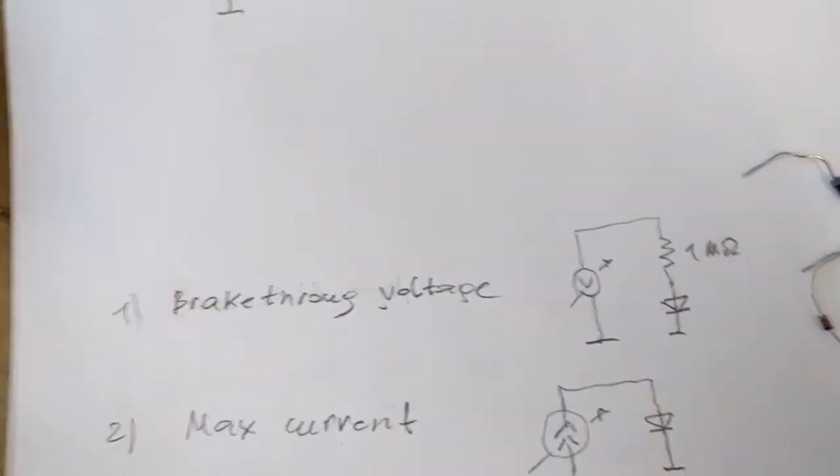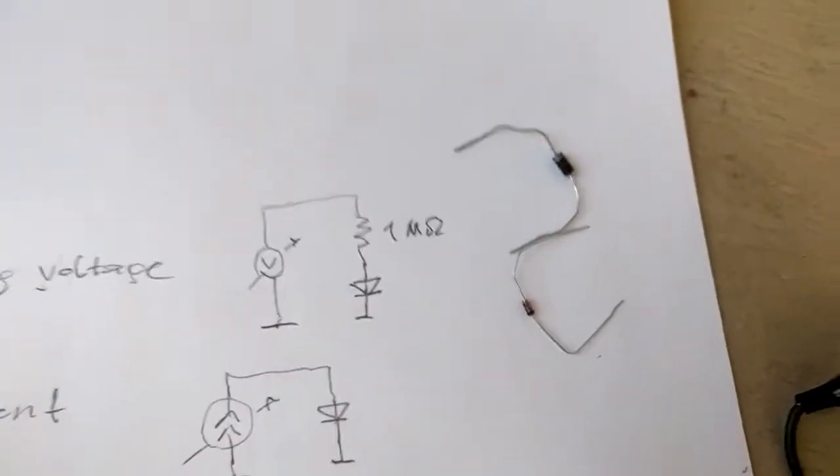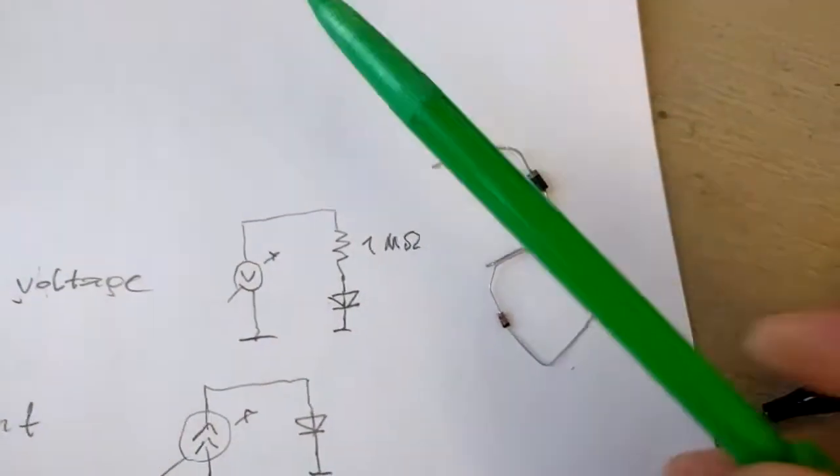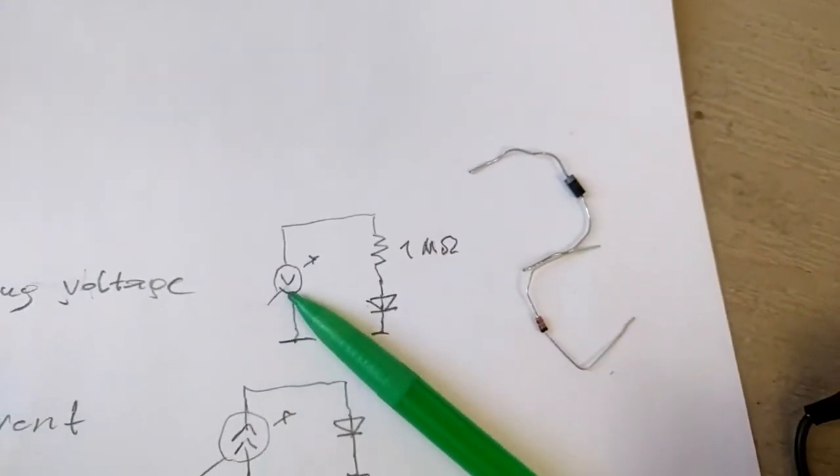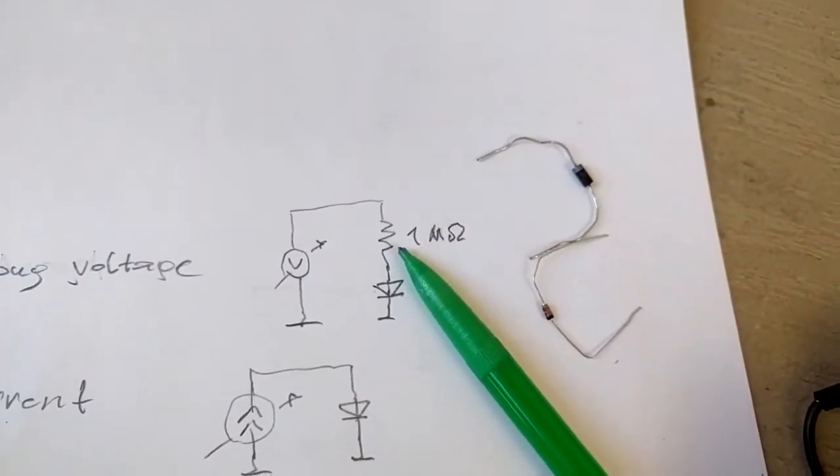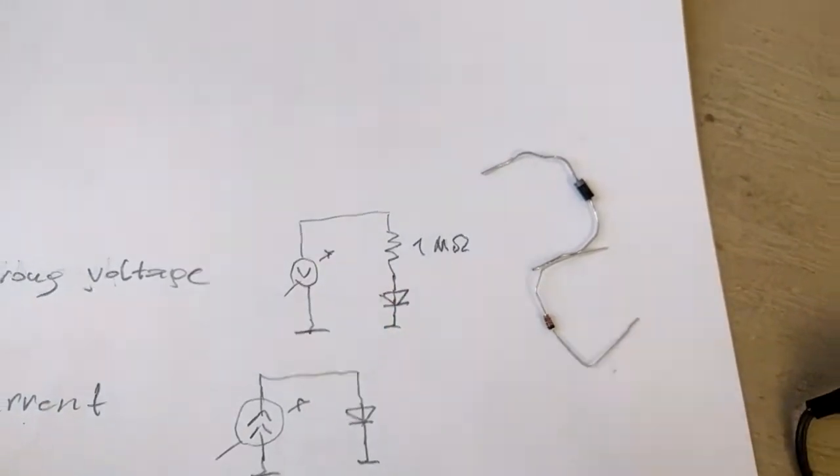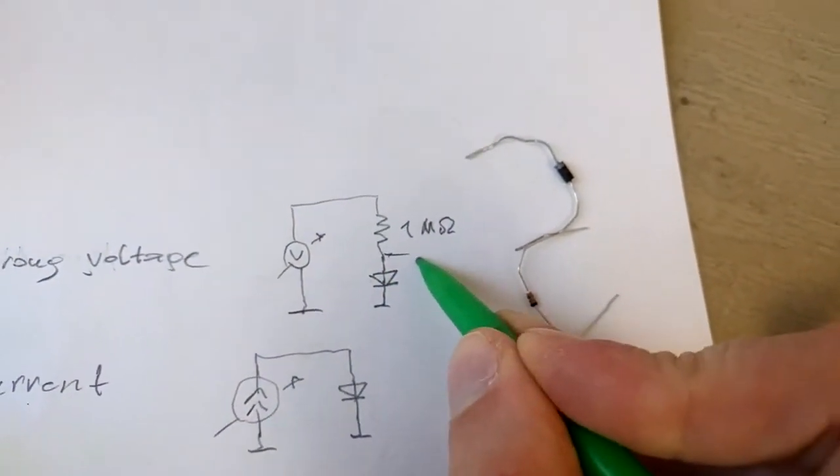Obviously, first is the breakthrough voltage. It's not really important. It can be easily tested if we have a variable voltage source, like a high voltage source, maybe a couple hundred volts and current limiting resistor, say 1 milliamp. We can detect at which voltage we have the breakthrough.